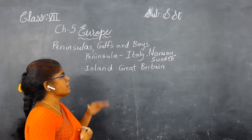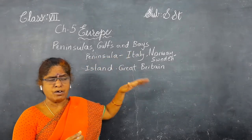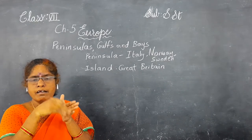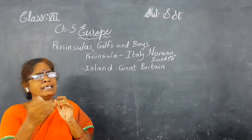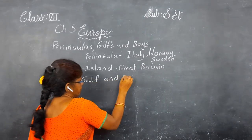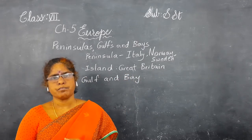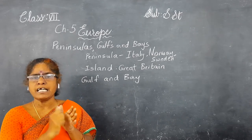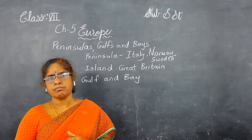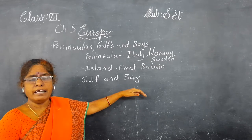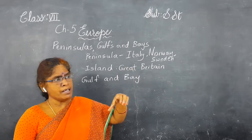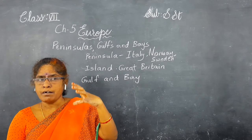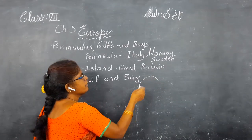Now we will see what is a gulf and bay. A peninsula is a land part surrounded by water on three sides, and an island on all sides. A gulf and bay is a water body which is enclosed by land on three sides. A bay is a water body which is enclosed by land on three sides and with a wide mouth — then we call it as a bay.